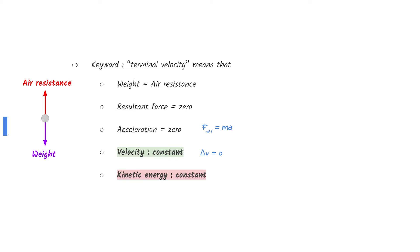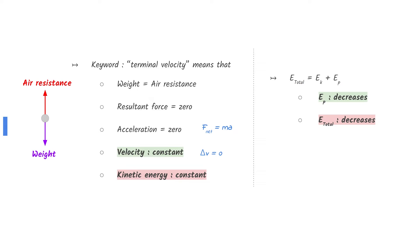Terminal velocity means that the ball is falling at constant velocity. The upward air resistance equals the downward weight. Resultant force is zero, therefore acceleration is zero. Total energy is the sum of the kinetic energy and potential energy. Although the kinetic energy remains constant, the gravitational potential energy decreases as the ball falls closer to the ground. Therefore, total energy also decreases.